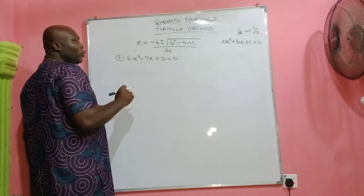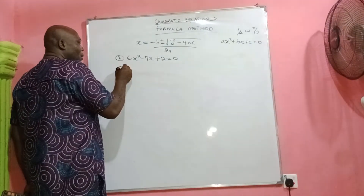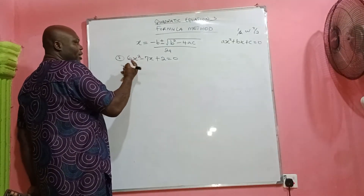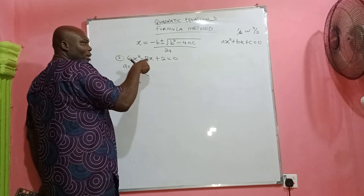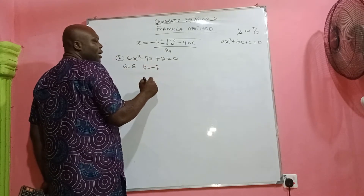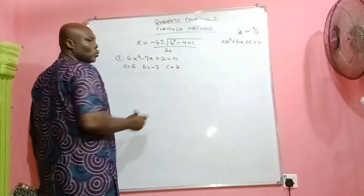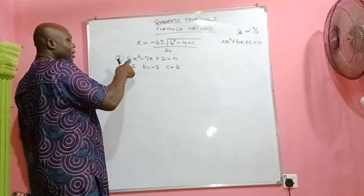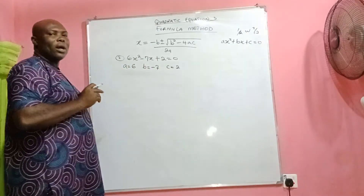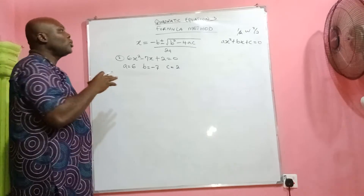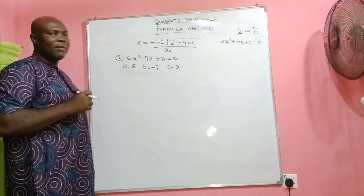Given ax² + bx + c = 0, what would be our 'a' here? 'a' is the coefficient of x squared, which is 6. Our 'b' is the coefficient of x, which is −7. And our 'c' is the constant, which is positive 2. So our a = 6, b = −7, and c = 2. We are going to substitute that into the almighty formula to find the values of x.